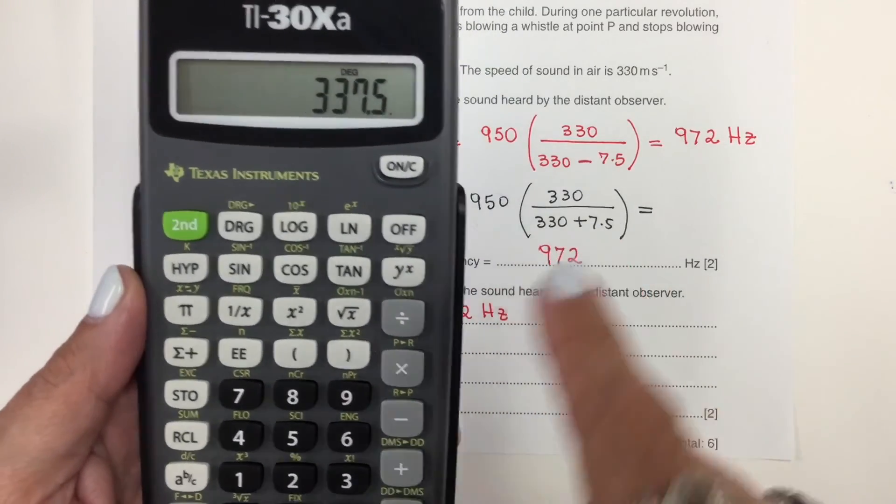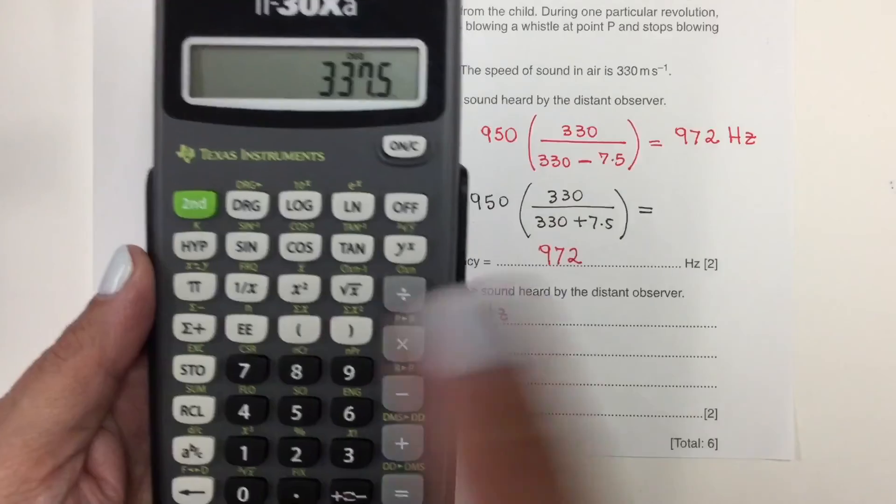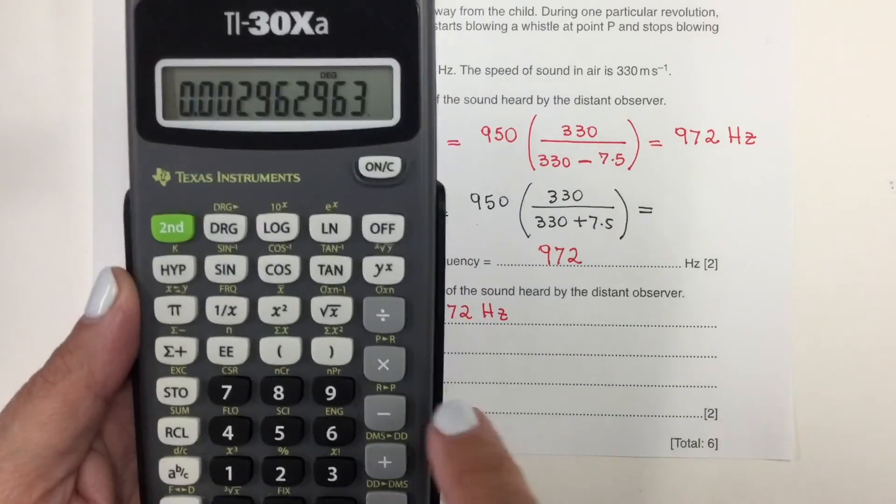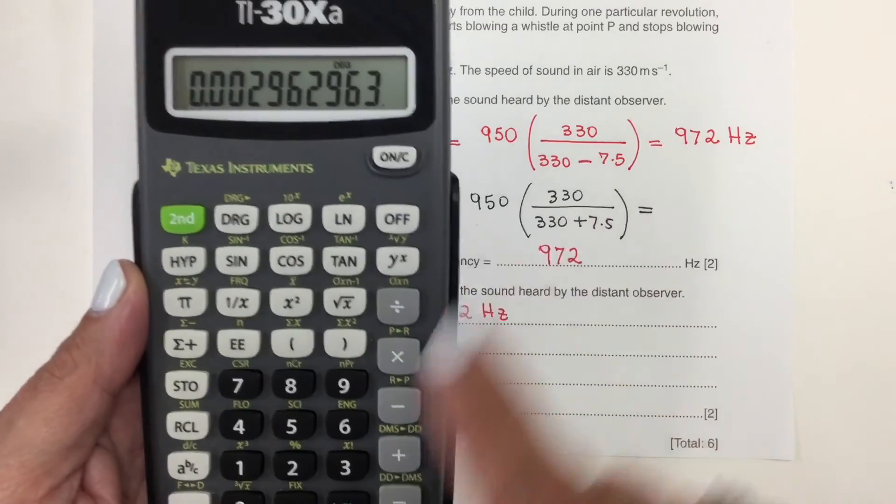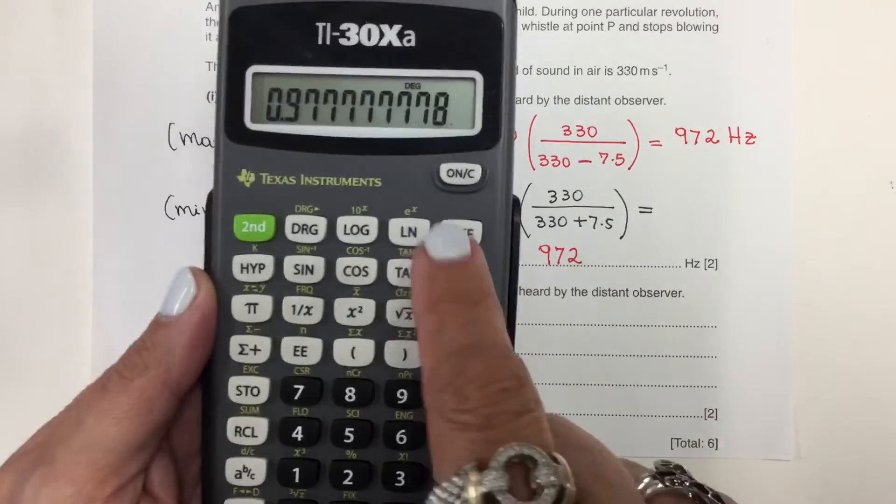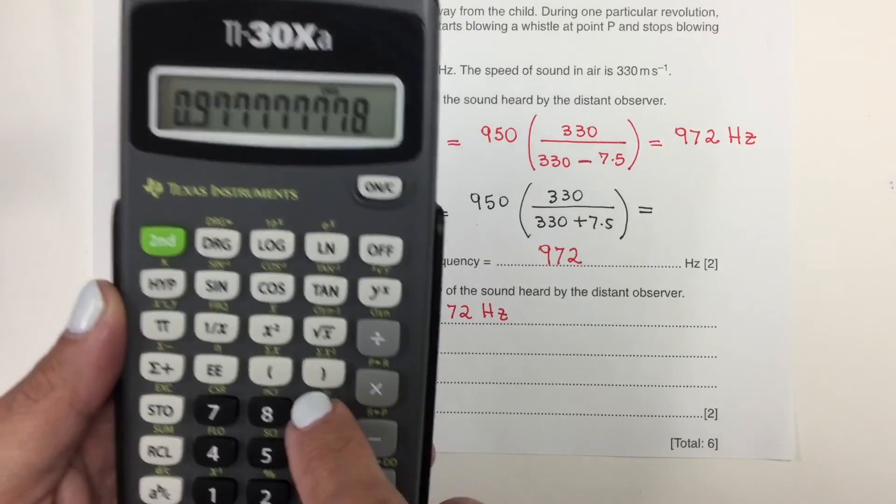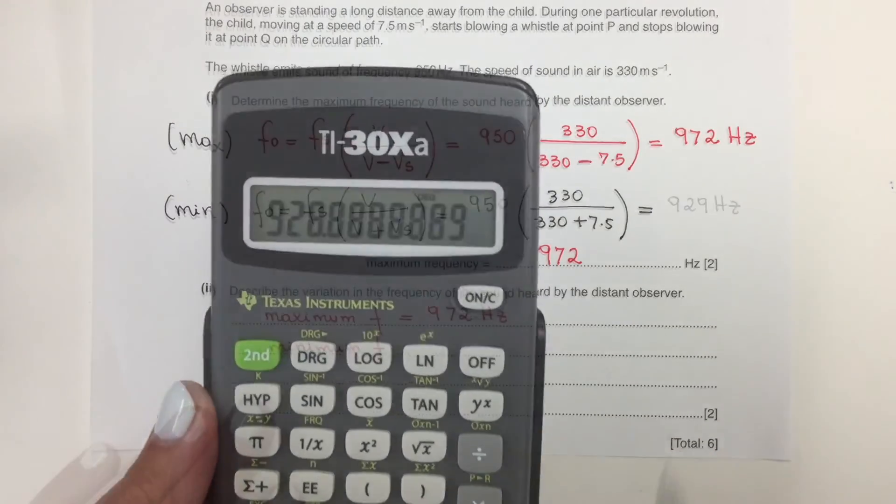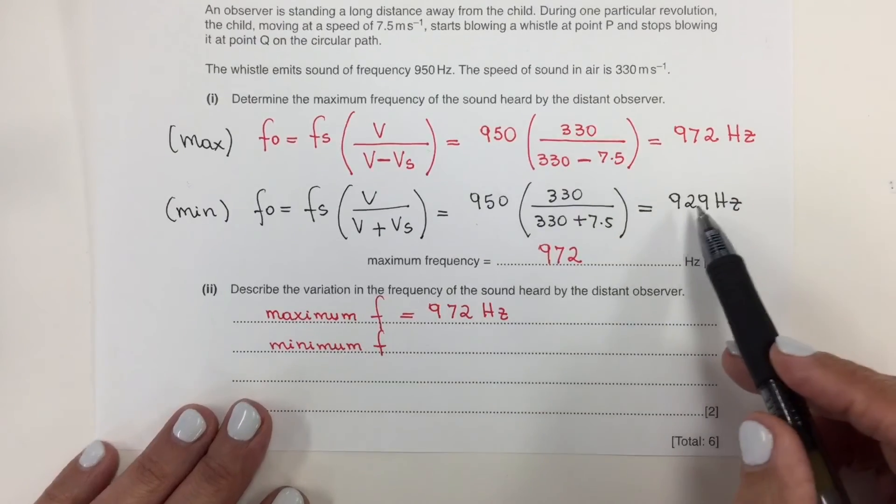Because it's on the denominator, so I move it to the numerator by inverting. So 920 here, and now times 330 and times 950. So 928. So I rounded to 929.